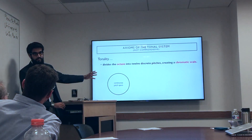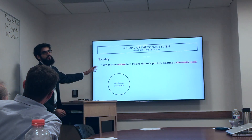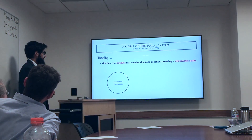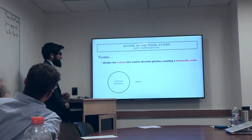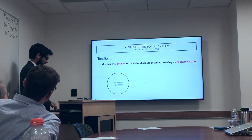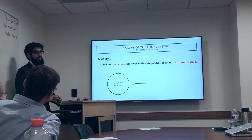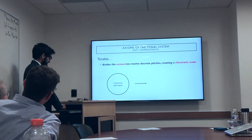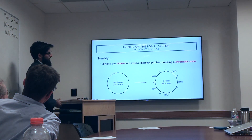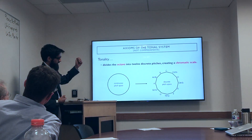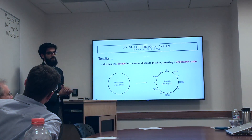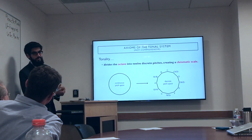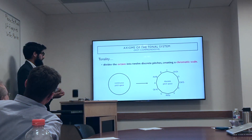You could consider the continuous pitch space as a circle with an infinite number of vertices — nothing discrete. Tonality then imposes a discretization onto it, specifically a 12-tone one. That's why we have 12 note names, represented here as a 12-gon. So that's a discrete pitch space — and that's one axiom of tonality.